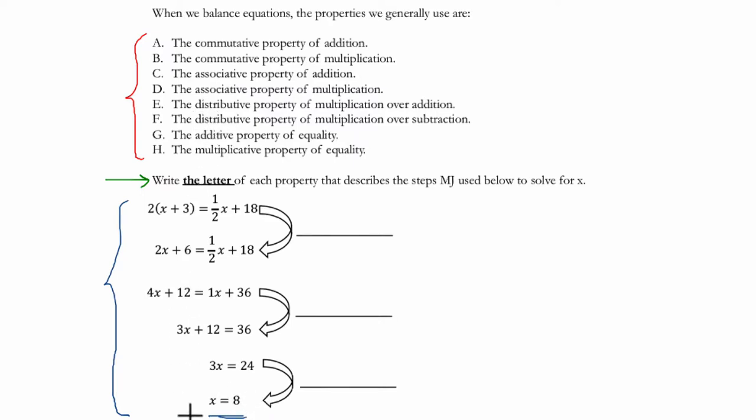So let's just begin by, I would look at this step right here first. This is the least intimidating step. So let's see what happens. Well, I know that 3X divided by 3 is X. I know 24 divided by 3 is 8. So they divided both sides by 3. So that means I would put the letter H here.